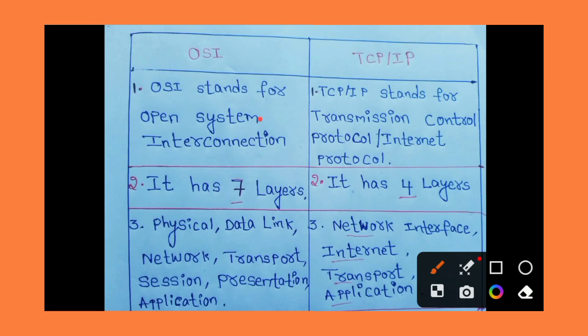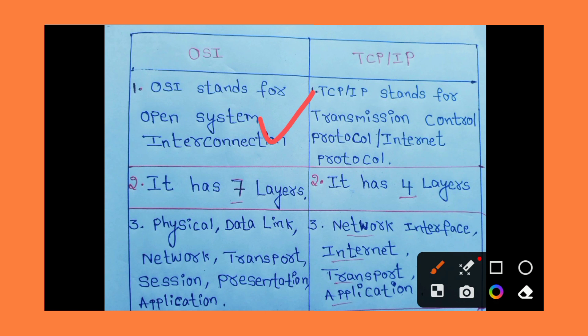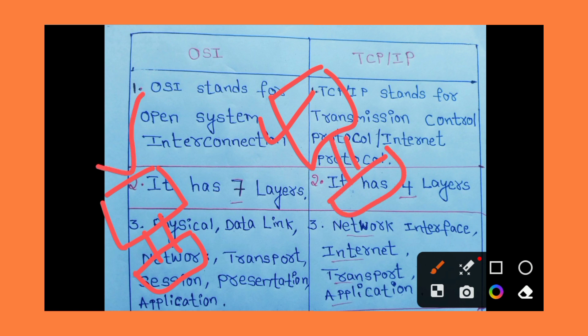Today we discuss the differences between OSI and TCP/IP reference models. OSI stands for Open System Interconnection. The OSI model defines how data is transferred from one computer to another computer — for example, between two PCs or two computers.